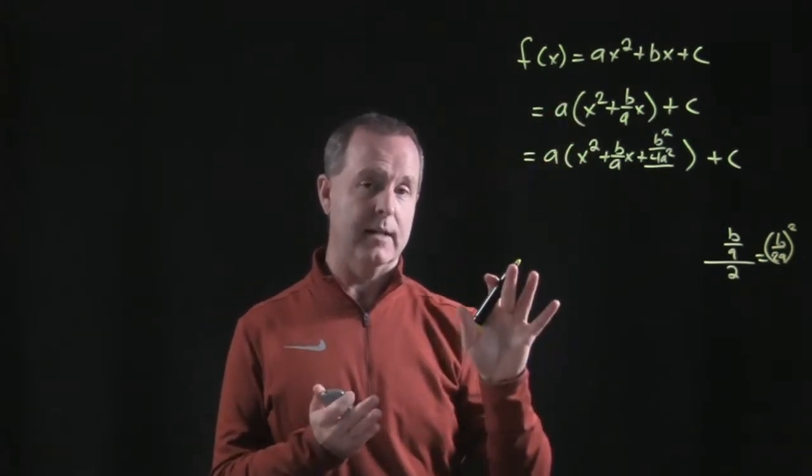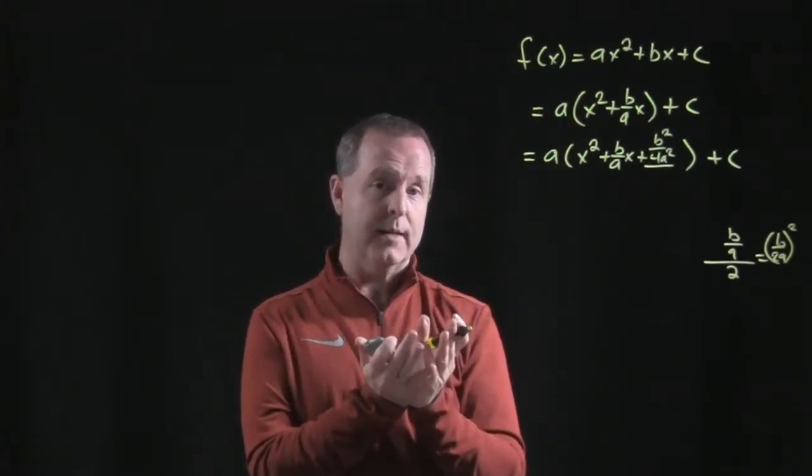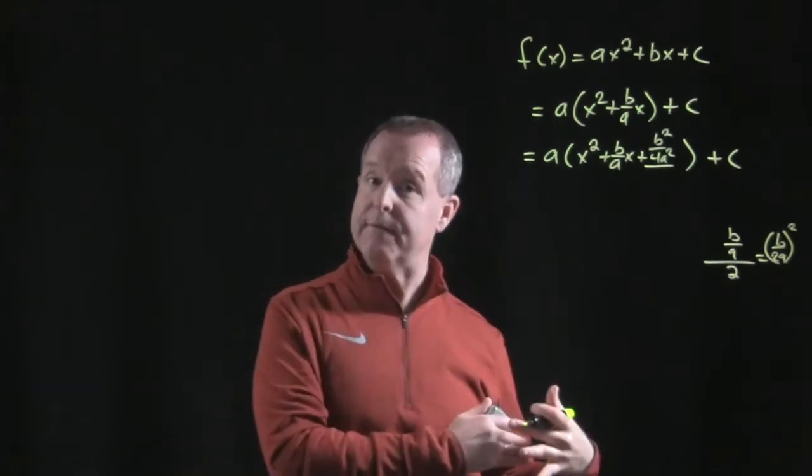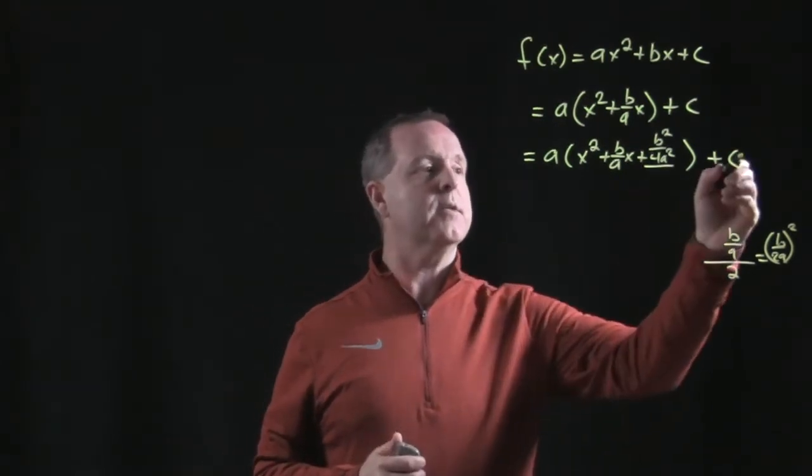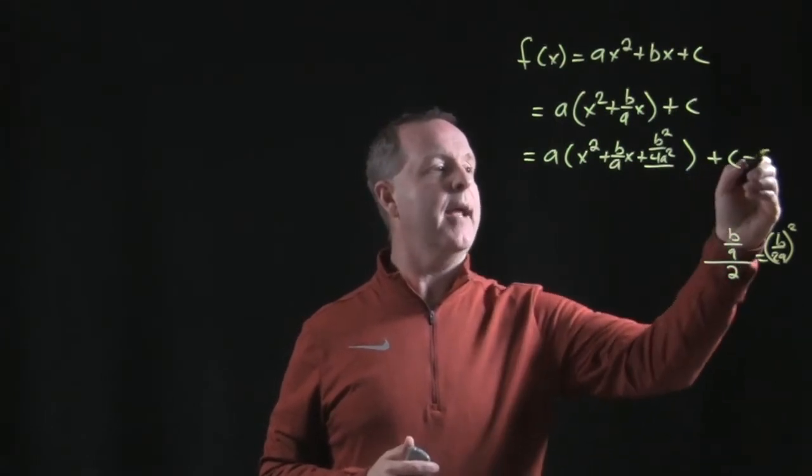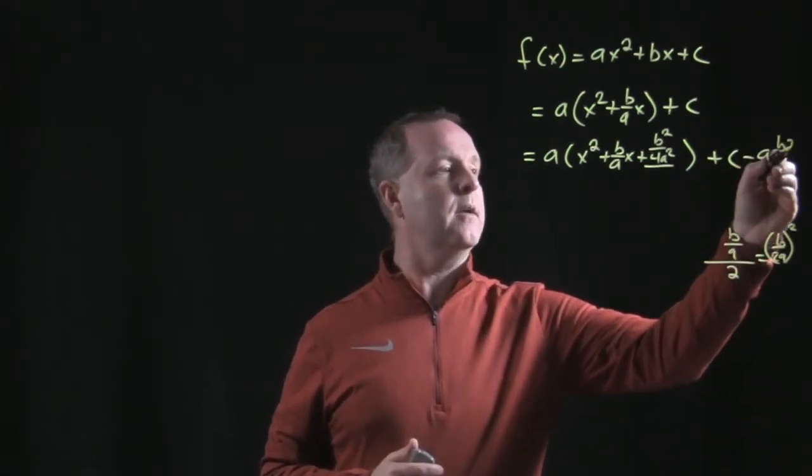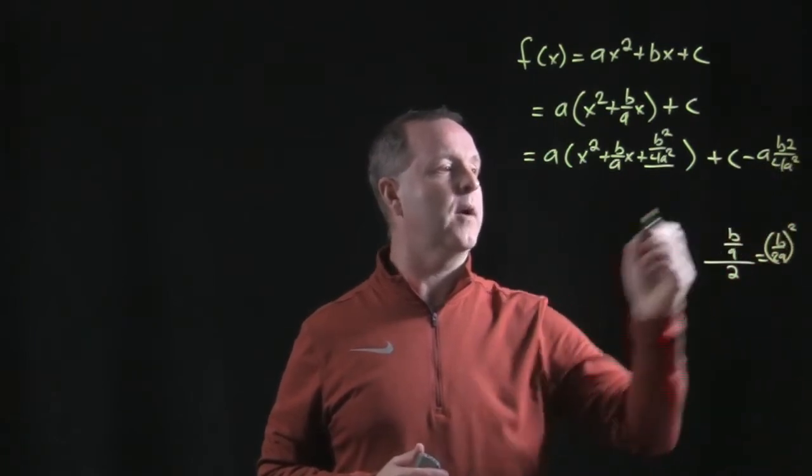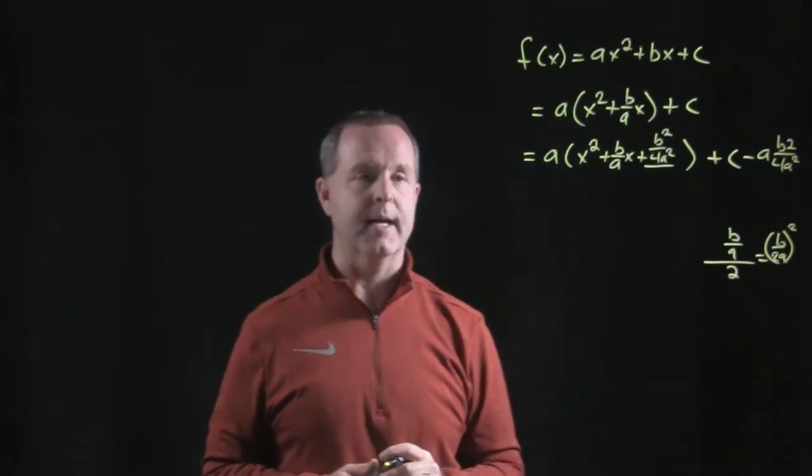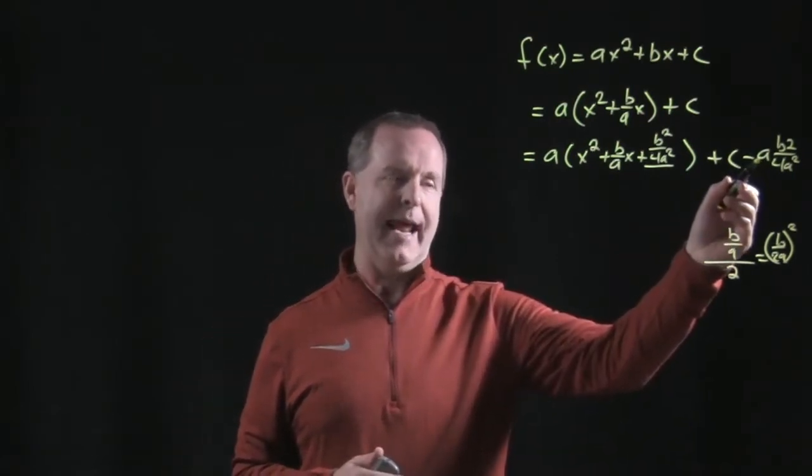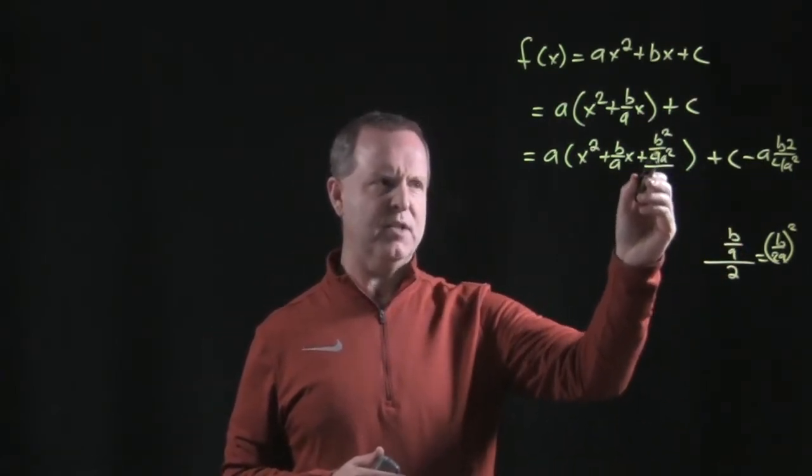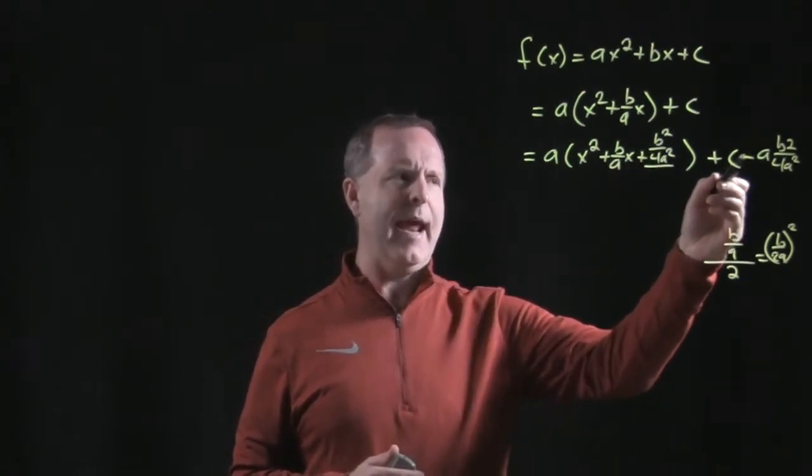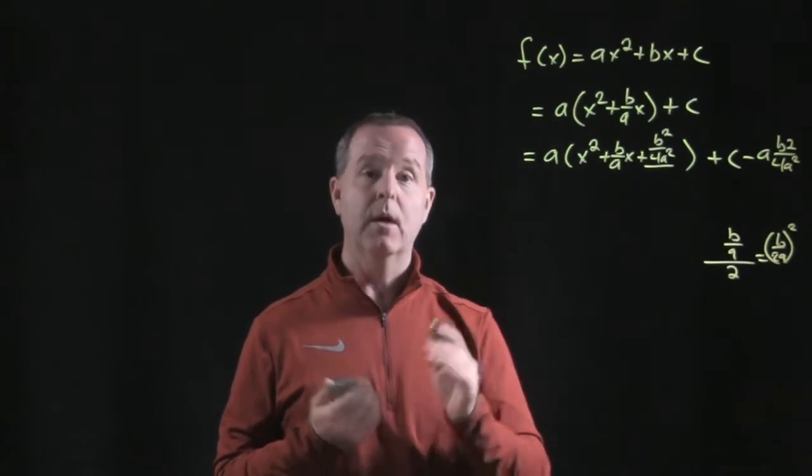Now to maintain the balance, because I add something to one side, I either have to add it to the other side or take it away from that same side as well. So that's what I'm going to do is I'm going to take away a times b squared all over 4a squared. And those a's will cancel out. I'll show you in a second. Now why did I multiply by a times this?